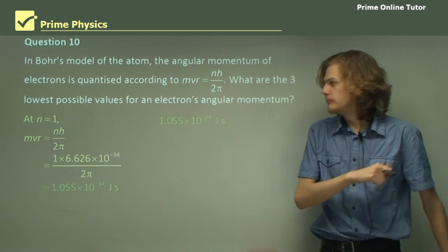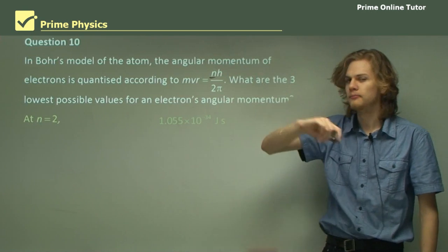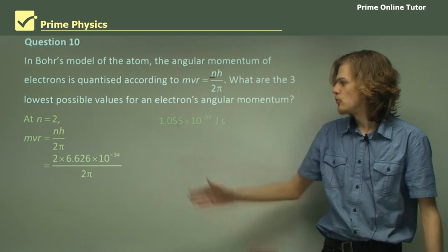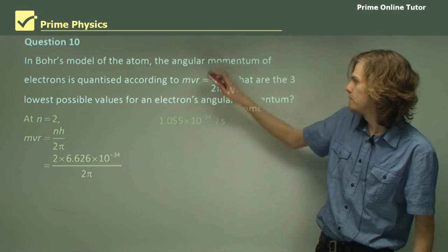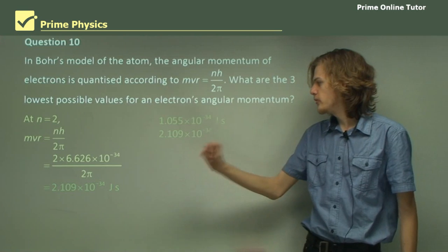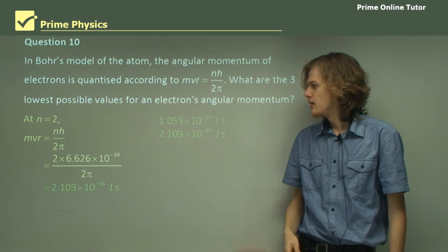Next one, n equals 2. At n equals 2, substitute n over here. So, we get our equation, of course, equals 2 times Planck's constant over 2 pi. And that gives us 2.1 times 10 to the minus 34 joule seconds. Alright, last one.